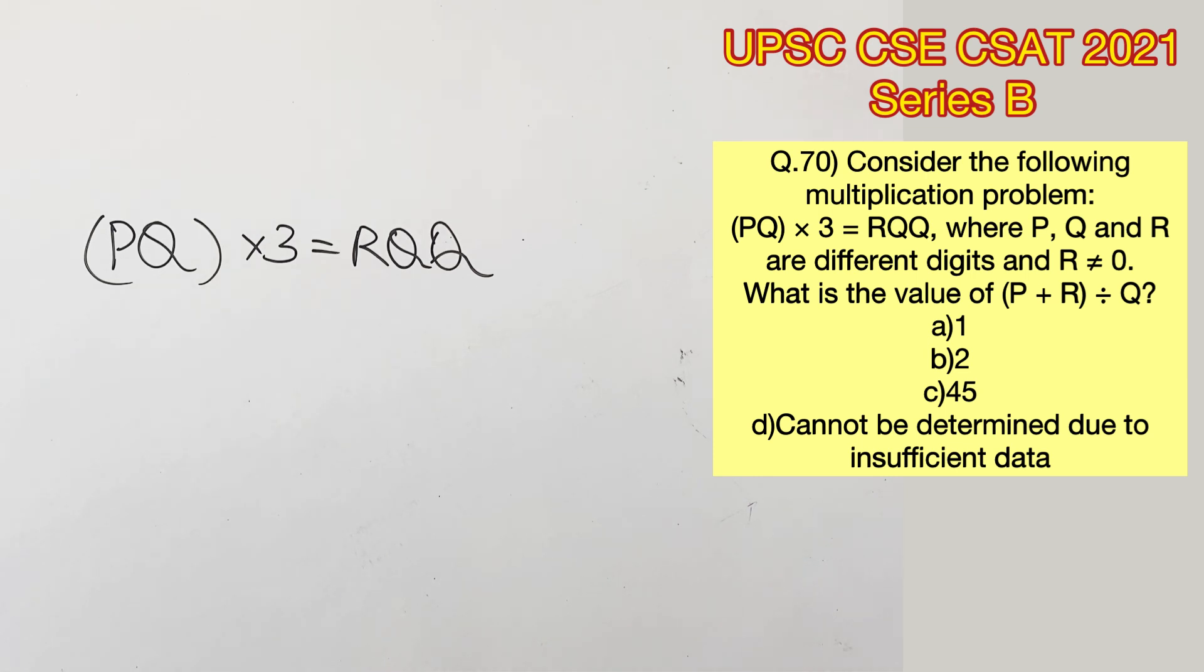Now if you see the units place, Q into 3 should give the value Q at the units place again. So let's try and substitute the digits.